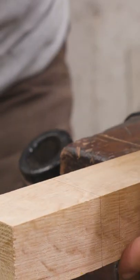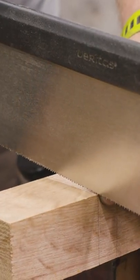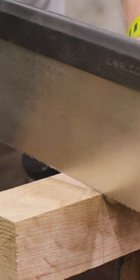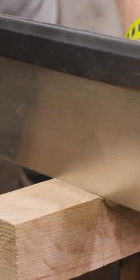Normally when I'm cutting this and I have a line going all the way around the board, I want to stay on that line all the way around. The problem is when I'm cutting, I can't see the side away from me.